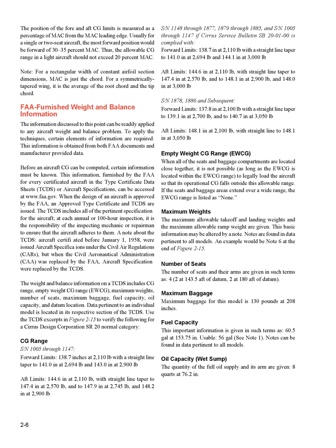Using the TCDS excerpts in figure 2-15, verify the following for a Cirrus Design Corporation SR20 normal category. For SN 1005 through 1147: forward limits are 138.7 in. at 2,110 lb, tapering to 141.0 in. at 2,694 lb and 143.0 in. at 2,900 lb. Aft limits are 144.6 in. at 2,110 lb, tapering to 147.4 in. at 2,570 lb, 147.9 in. at 2,745 lb, and 148.2 in. at 2,900 lb. For SN 1148–1877, 1879–1885, and SN 1005–1147 with Cirrus Service Bulletin SB January 20, 2000 complied with: forward limits are 138.7 in. at 2,110 lb tapering to 141.0 in. at 2,694 lb and 144.1 in. at 3,000 lb.